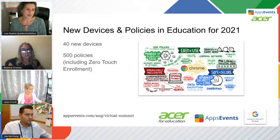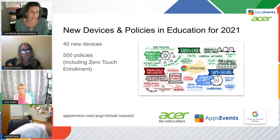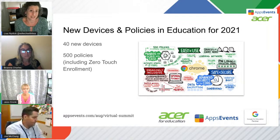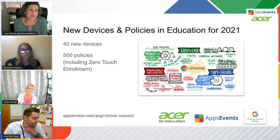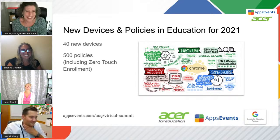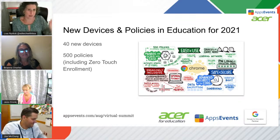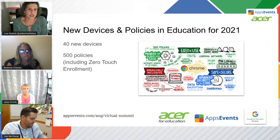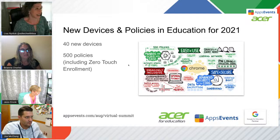I want to talk a little bit about Chromebooks. Google announced that there are 40 new Chromebook devices available for this coming school year, and I know folks out there have probably purchased some of these already for their schools. There are also 500 new policies in the admin console. The one that just floats right up to the top, of course, is zero touch enrollment — to be able to purchase Chromebooks and not have to physically touch them to enroll. I thought it was easy before, but it's even easier now.